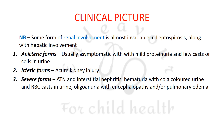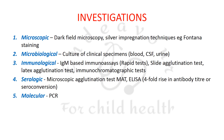In anicteric forms, renal involvement is usually asymptomatic with mild proteinuria and few casts in urine. Icteric forms are characterized by acute kidney injury. Severe forms show acute tubular necrosis and interstitial nephritis, hematuria with cola-colored urine, RBC casts, oliguria with encephalopathy, and/or pulmonary edema — frank features of acute kidney injury.